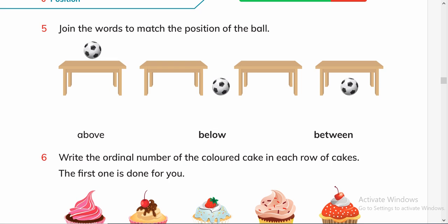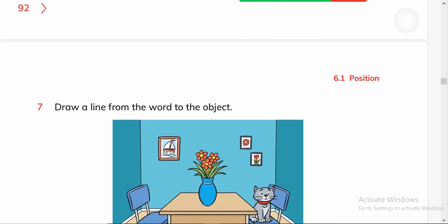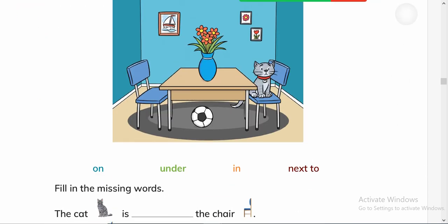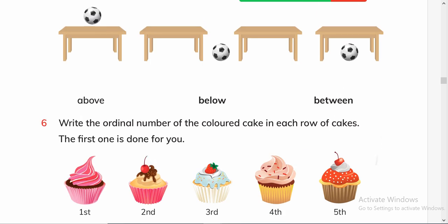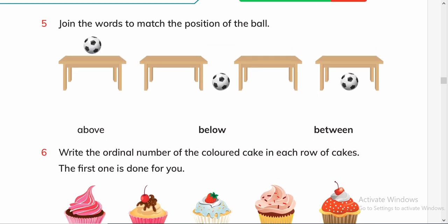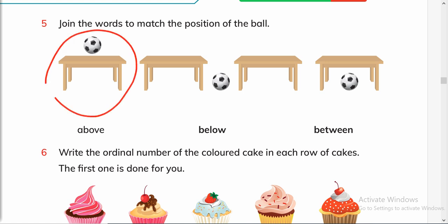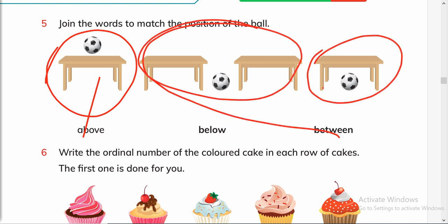Join the words to match the position of the ball. This is the last page we will do and we will do the rest of the chapter later. This ball is above the table. And this one is between the tables. And this one is below the table.